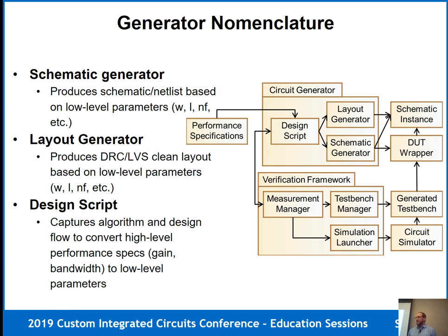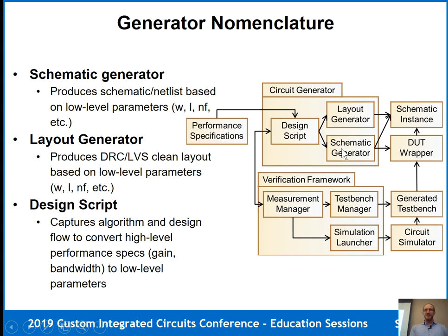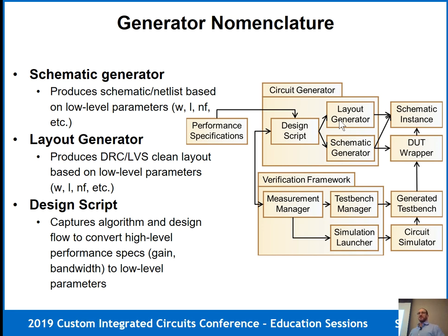From a software standpoint, we partition a complete circuit generator into three big blocks. First is the schematic generator: you feed it very low-level parameters — widths, lengths, number of fingers — and it produces the actual schematic, typically in a Cadence Virtuoso representation. Similarly, the layout generator takes in fairly low-level parameters like transistor widths, lengths, number of fingers, and perhaps area constraints, and produces DRC-LVS-correct layouts of that circuit block.